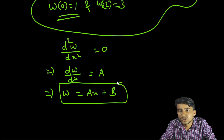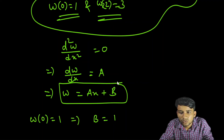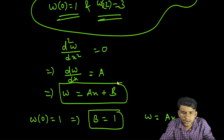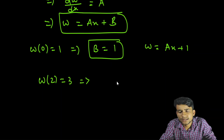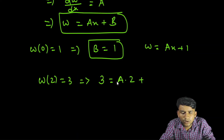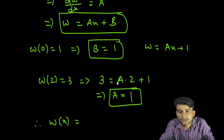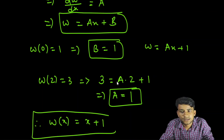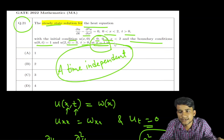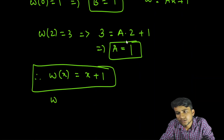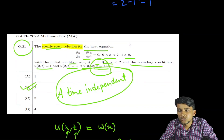Applying w(0) = 1: we get b = 1, so w = ax + 1. Applying w(2) = 3: 3 = a(2) + 1, which gives a = 1. Therefore, the steady state solution is w(x) = x + 1. To find the value at x = 1: w(1) = 1 + 1 = 2.